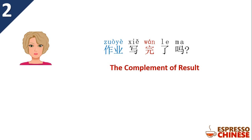作业写完了吗? Of course you can also use the regular structure. You can say 你写完作业了吗? Both are okay.